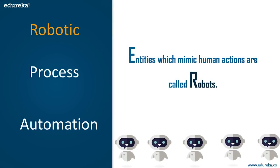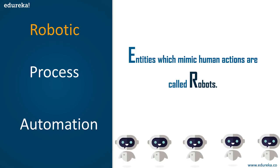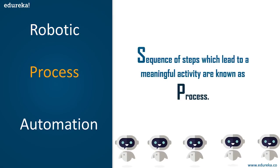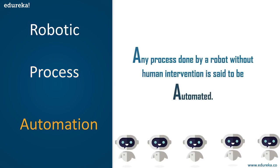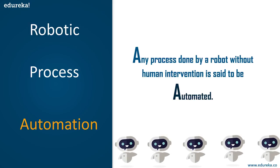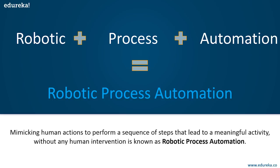Robotics refers to any entities which mimic human actions and perform a task. Process is basically a sequence of steps that lead to a meaningful activity — so whenever a robot has to perform a task, it follows a sequence of steps, and those steps are nothing but a process. Finally, automation is any process done by a robot without any human intervention.